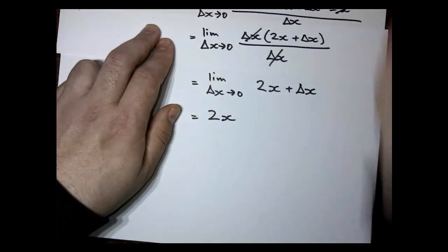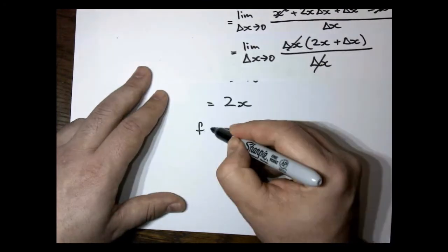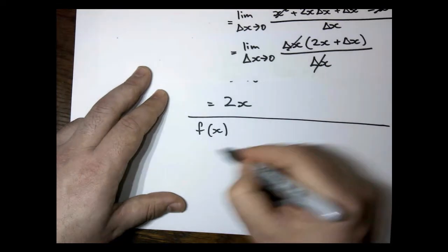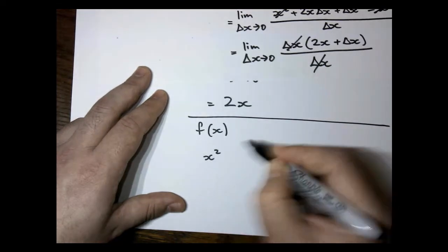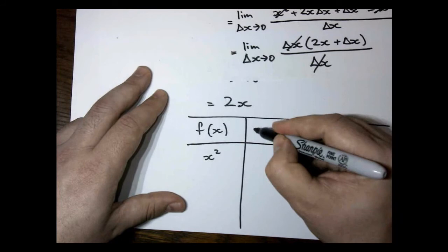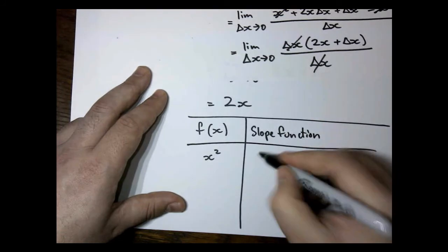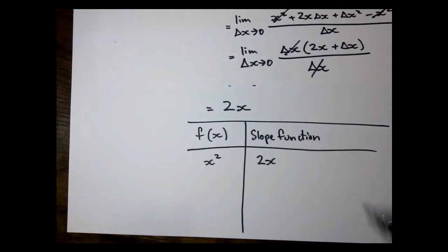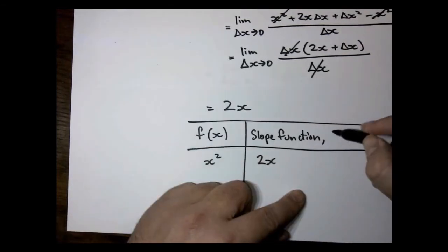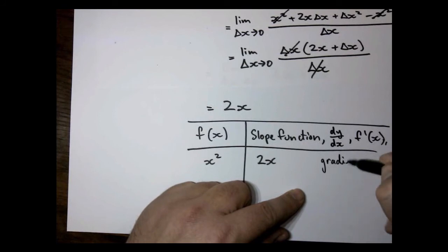Now a few things worth noting. What we did is we started off with some kind of function, and it was called x squared. And what we did is we found a thing called slope function. This is also known as gradient function, and perhaps most commonly known as the derivative.